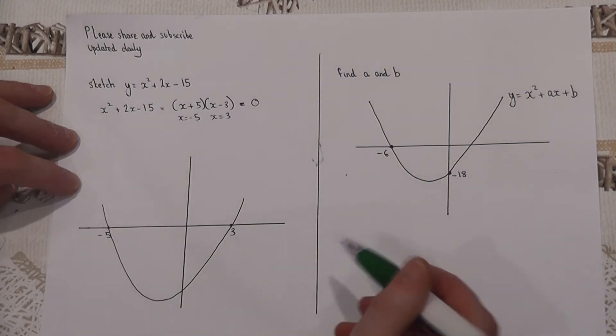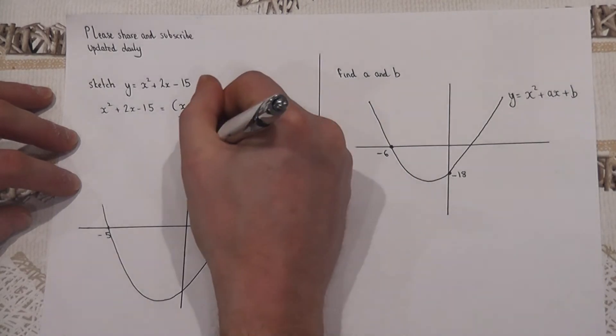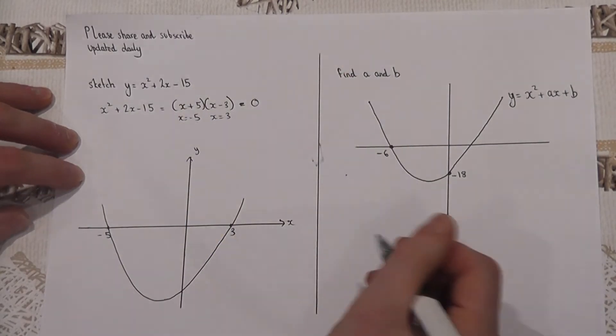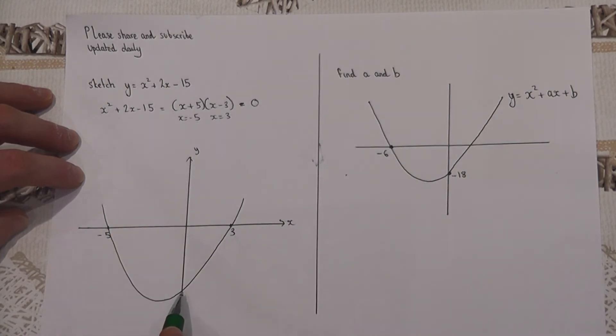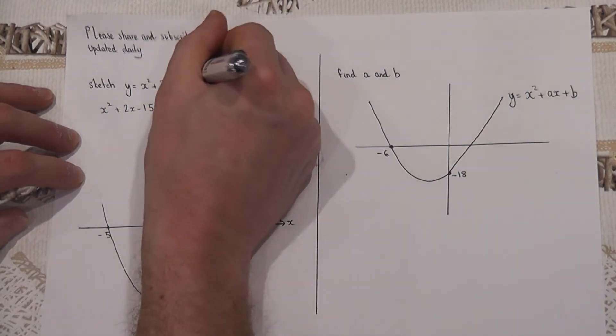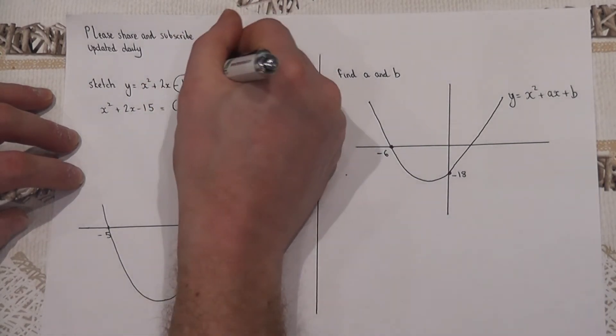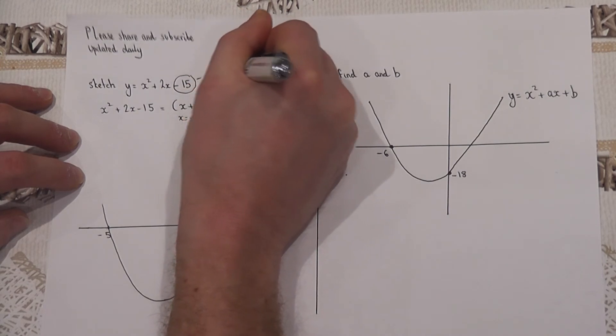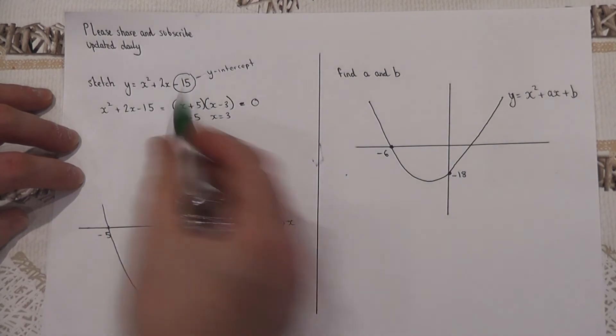Now there's one other key value I can find very quickly and it's called the y-intercept. It's the value where the graph hits the y-axis. Now if you know the equation, then this constant, minus 15 in this case, is always the y-intercept. But the reason is the y-intercept is where there's no x coordinate, x is zero.